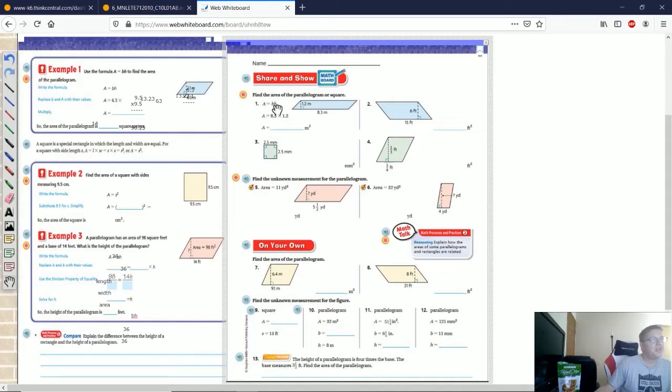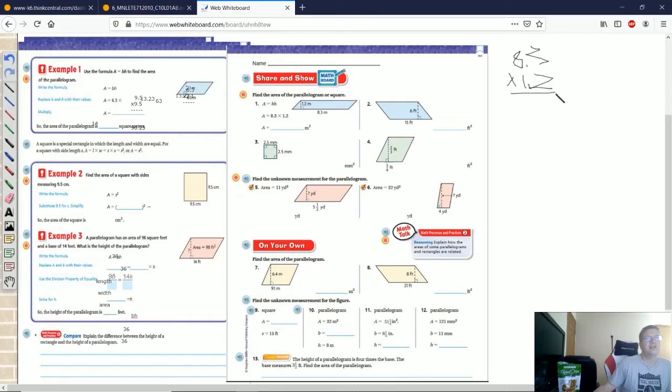Number one we have base and height. Our base is going to be 8.3, our height is 1.2. If I multiply those together, you can work on this part on your own while I'm working on it. That's going to give me 996, but then we need to put our decimal point in. So that should give us 9.96.